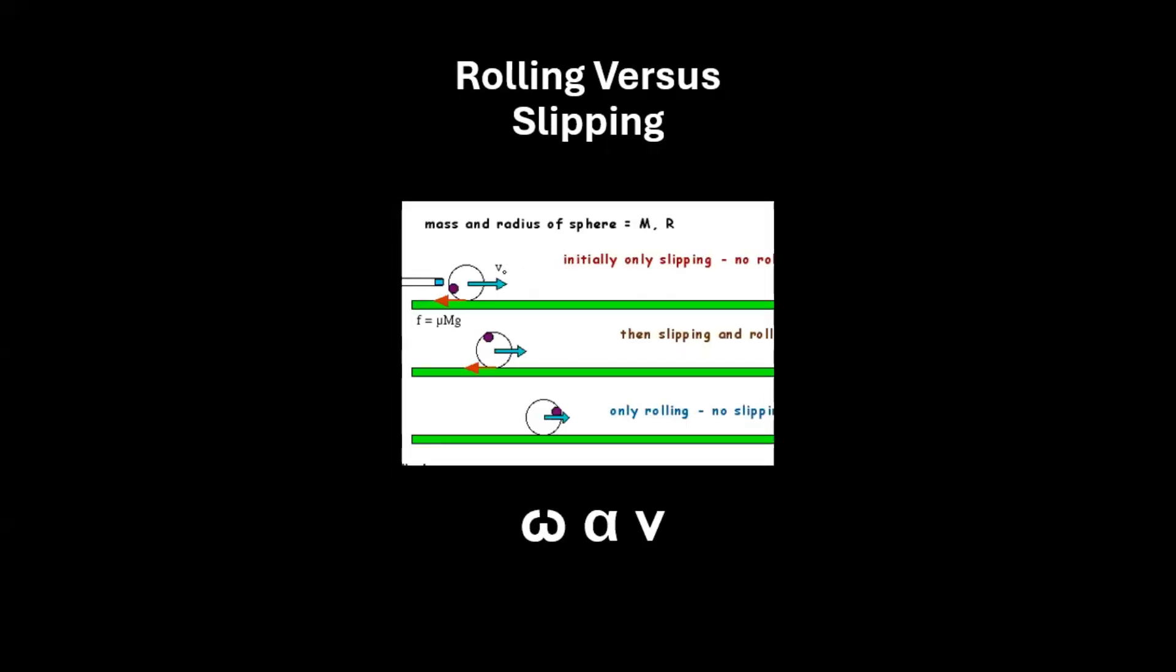Additionally, the force of static friction between the object and the surface must prevent any relative sliding motion between them.